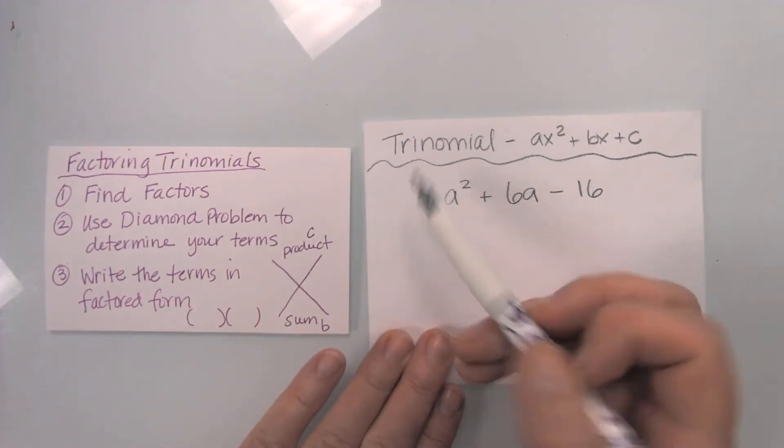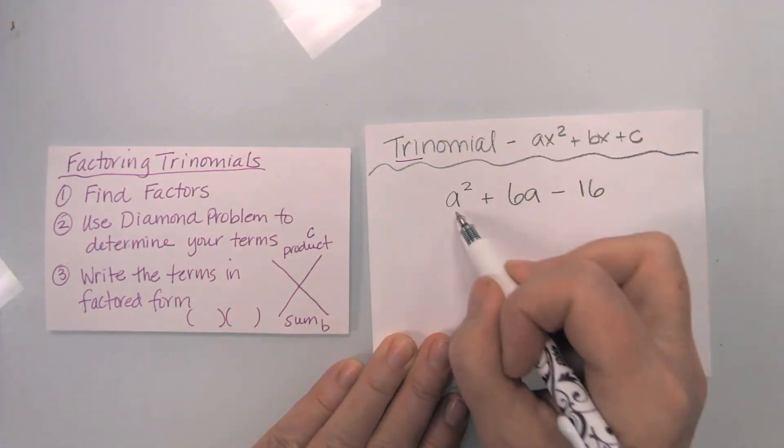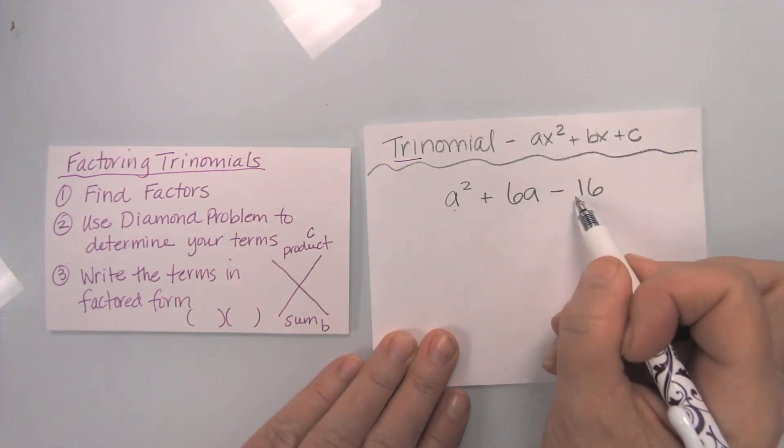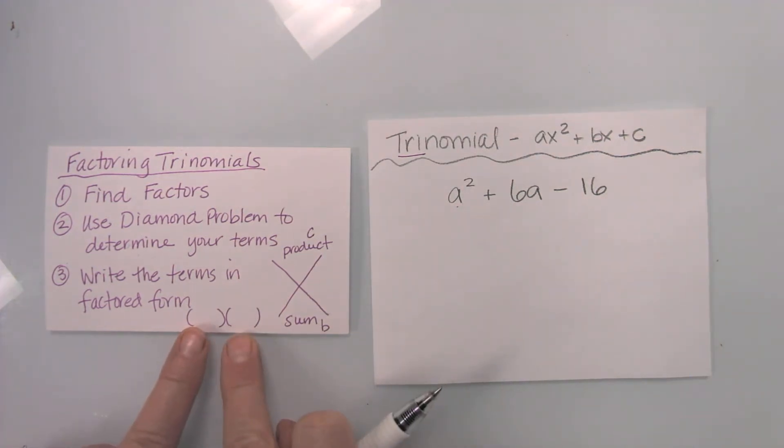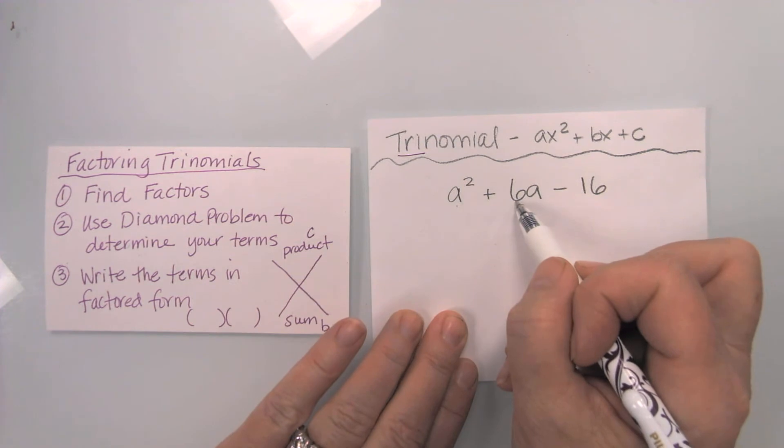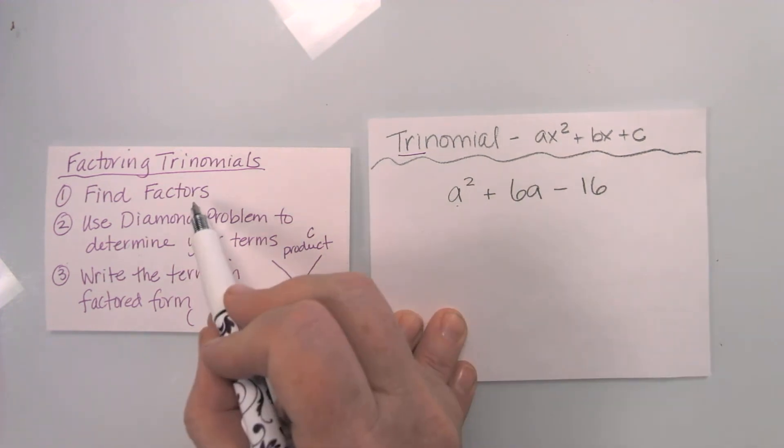Okay, here's a trinomial. Remember, tri means three terms. And I want to turn this into factored form where it's going to be like two binomials times each other. So the first thing I'm going to do is look at my numbers and find my factors.